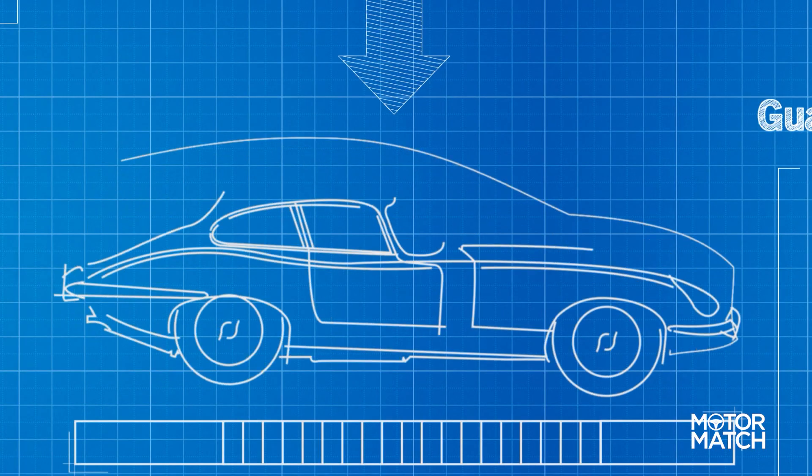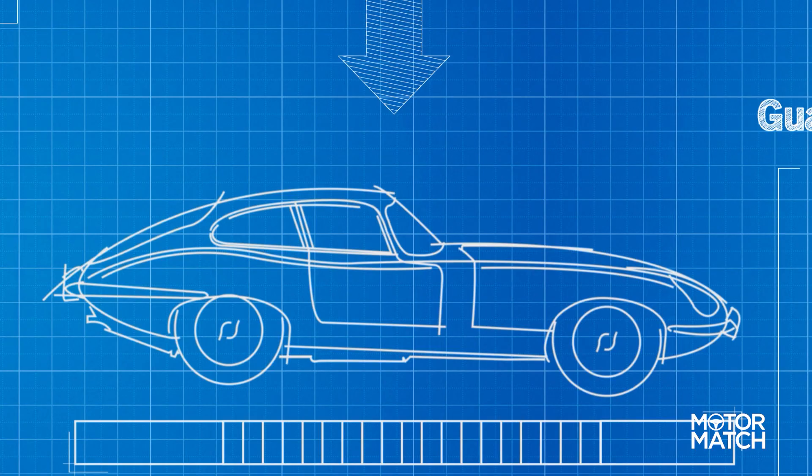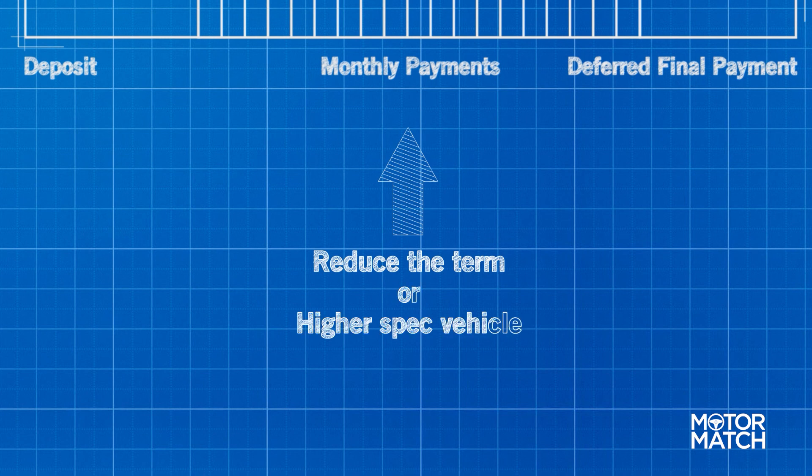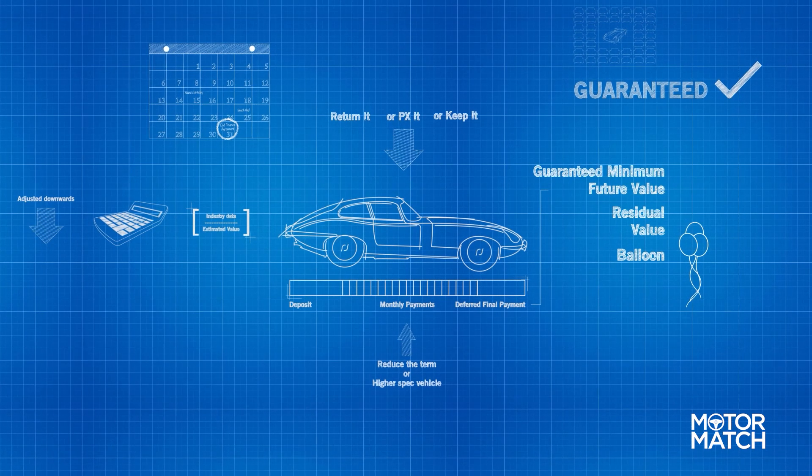Because repayments on a PCP are typically lower than personal loans or higher purchase agreements, you can reduce the term of the agreement or even consider a higher specification of vehicle for a similar monthly payment.